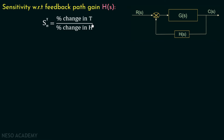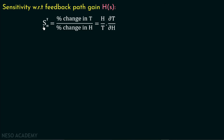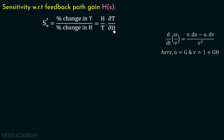Percent change in T can be written as del T over T multiplied with 100, and percent change in H can be written as del H over H multiplied with 100. Solving this gives H over T multiplied with del T over del H. We already know T is the overall transfer function of a closed loop system, equal to G over (1 + GH). So in order to find the expression for S_T^H, we first need to find del T over del H — the derivative of the transfer function with respect to H — where T equals G over (1 + GH). We will find this derivative using the U by V rule.